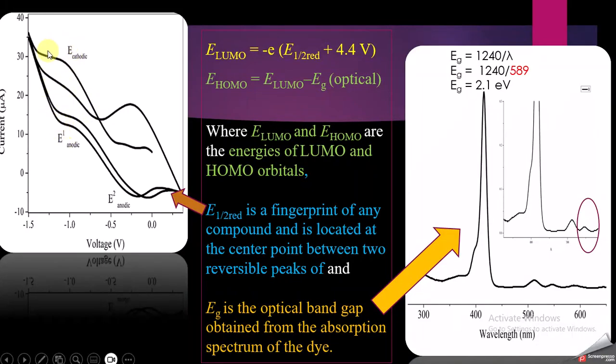I will use this peak pair to find the half-wave reduction potential. The half-wave reduction potential is a fingerprint of any compound and is located at the center point between two reversible peaks.